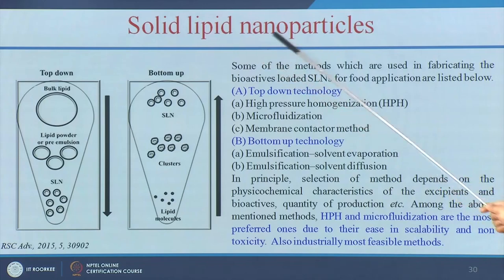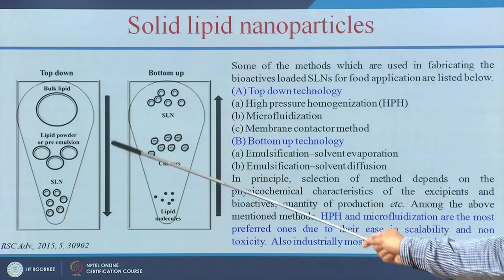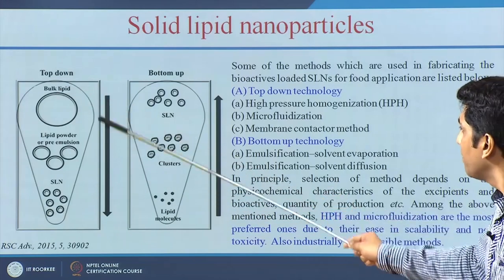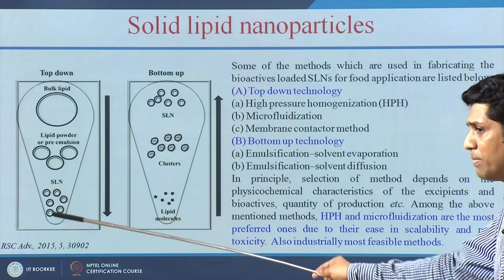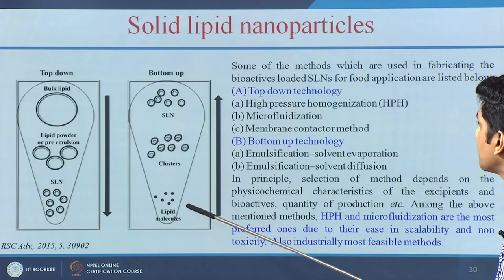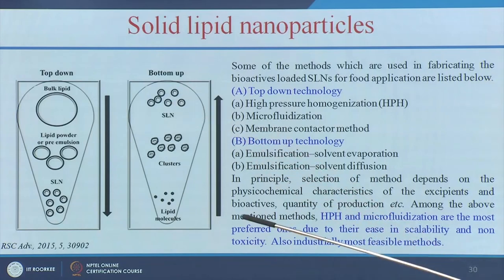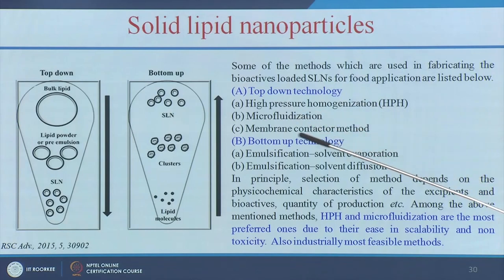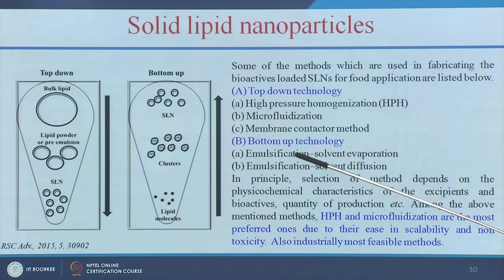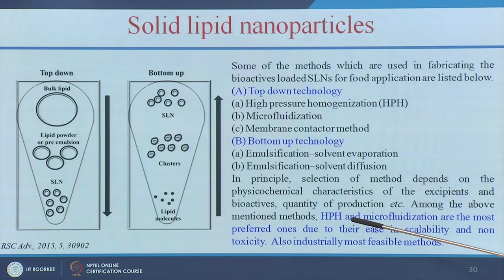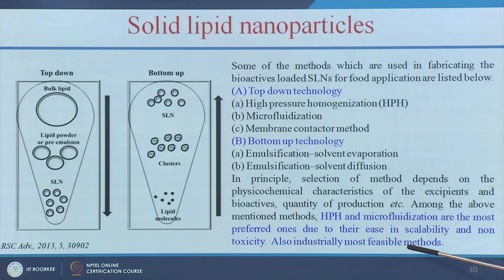Solid lipid nanoparticles can be made by top-down or bottom-up approaches. Top-down methods include high-pressure homogenization, microfluidization, and membrane contractor method. Bottom-up methods include emulsification-solvent evaporation and emulsification-solvent diffusion. High-pressure homogenization and microfluidization are the most preferred methods because they are easy to use and industrially feasible.